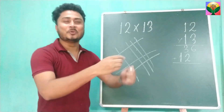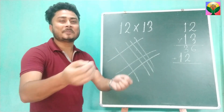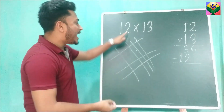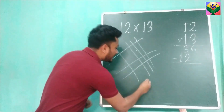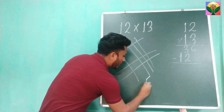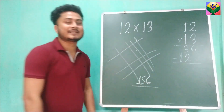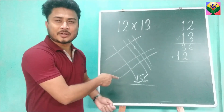What does that mean? It doesn't mean that it's not. I'm going to write this result, and this result is 156. Isn't that interesting?